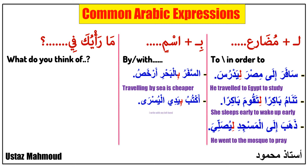Next sentence: 'Aktub bi-yadiy al-yusra' — it means 'I write with my left hand.' 'Bi' means 'with,' 'yadiy' means 'my hand,' 'al-yusra' means 'left.' As you see, 'bi' is followed by 'yad,' which is a noun.